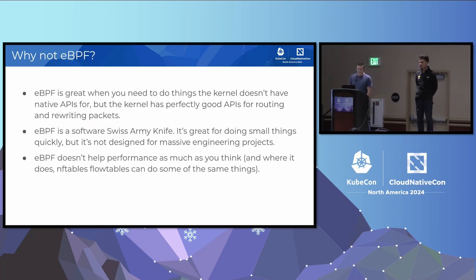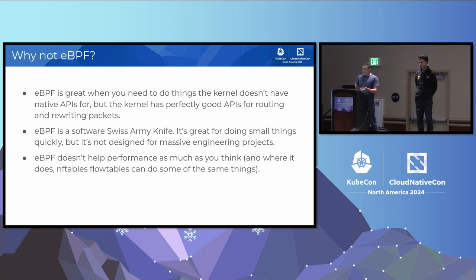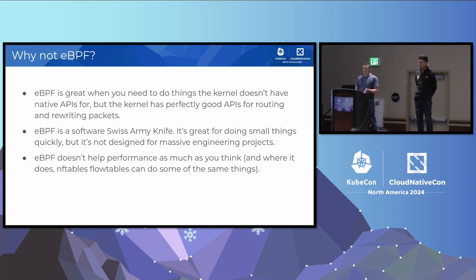The next obvious possibility is eBPF. eBPF is great when you need to do things the kernel doesn't have APIs for, but KubeProxy needs to move packets around, rewrite some packets, drop other packets — those are all things the kernel already knows how to do via netfilter and routing. eBPF is sort of like a Swiss Army knife: it's great to have around for simple things, but you wouldn't want to build a house with a Swiss Army knife. Likewise, you don't want to do a massive software engineering project with eBPF. We don't write our control plane in machine language, so why should we write our data plane in machine language?